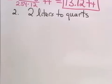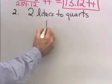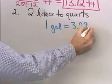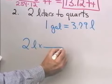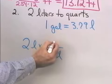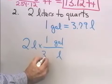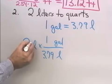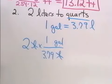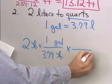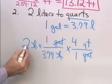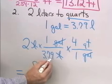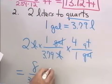Let's look at another problem. This time I want to go from 2 liters to quarts. The conversion factor I have is 1 gallon equals 3.79 liters. I start with 2 liters and multiply by a conversion factor that allows liters to divide out, going directly to gallons — 1 gallon over 3.79 liters. My liters divide out and I'm left with gallons. I then multiply by 4 quarts per 1 gallon so gallons divide out, leaving me with 2 times 1 times 4 divided by 3.79 quarts.